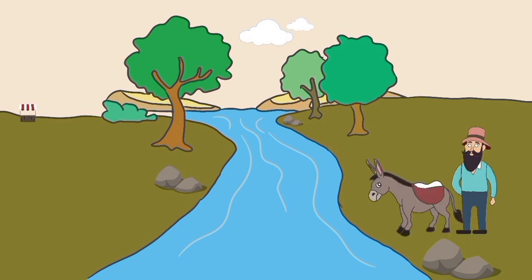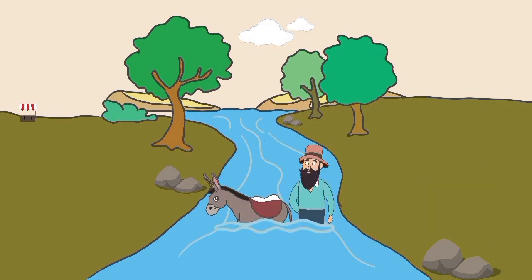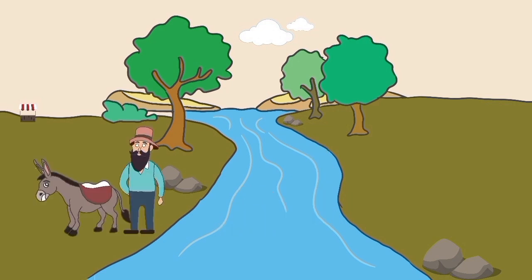One day, when the merchant and the donkey were crossing the river, the donkey unfortunately slipped and fell in with the bags of salt it was carrying. The donkey brayed as he scrambled to get back up to the bank of the river.